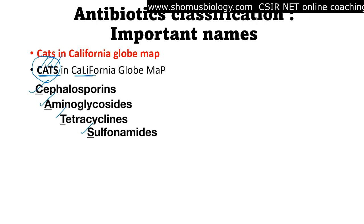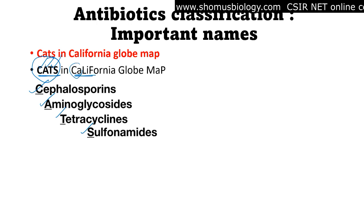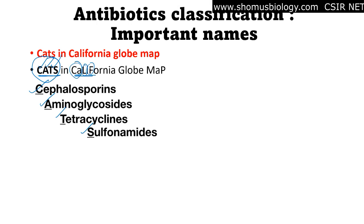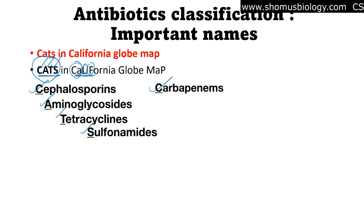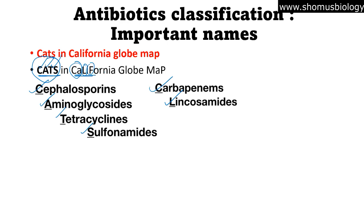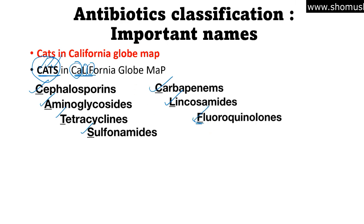Now we go to CALIFORNIA. CA is for Carbapenems, LI is for Lincosamides, and F is for Fluoroquinolones. So California gives us: CA for Carbapenems, LI for Lincosamides, and F for Fluoroquinolones.